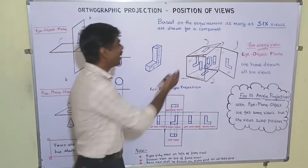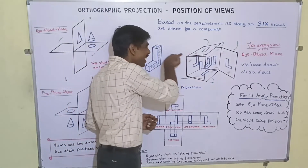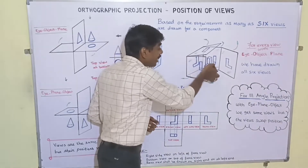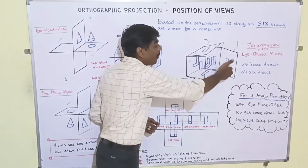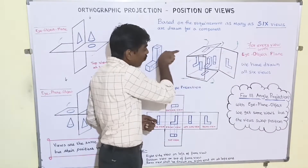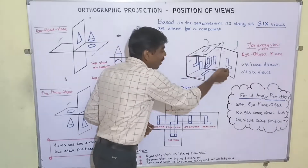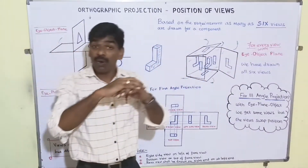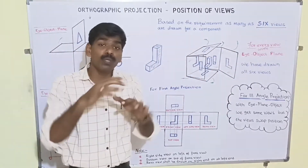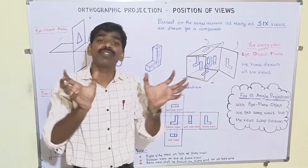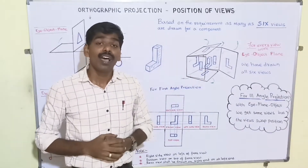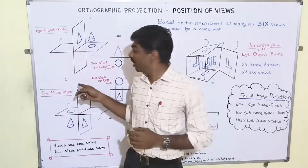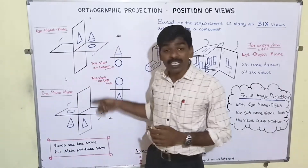For the rear view, we look from the rear side: eye, then object, then plane. Looking from the rear side we get the rear view. So we have obtained all six views on the faces of the cube. Now the question is where to position them, just as we did with rotating the horizontal plane.